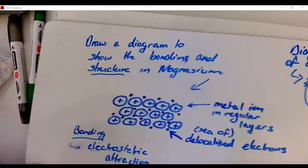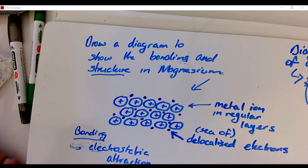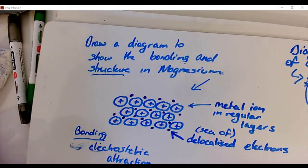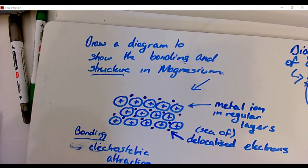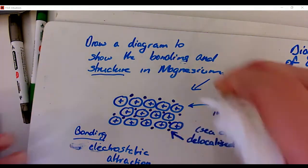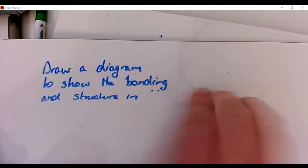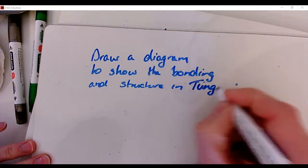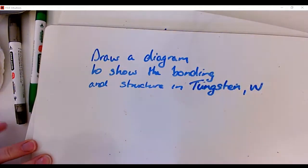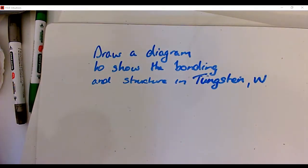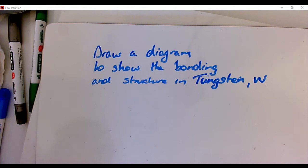Try another one - draw a diagram to show the bonding and structure in tungsten. Tungsten has the symbol W - I think it's because it's a German-derived name originally. Pause the video and have a go at drawing the diagram of tungsten, then let Mrs. Carraher know when you're ready to see the answer.